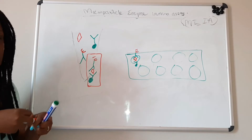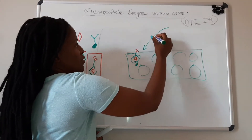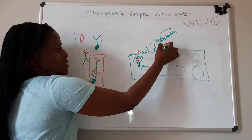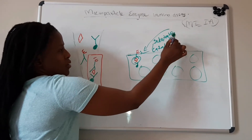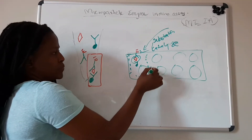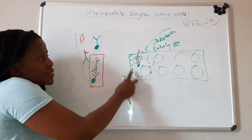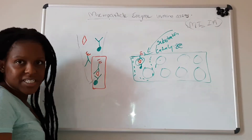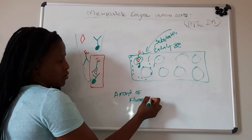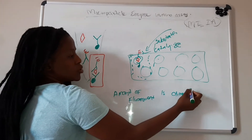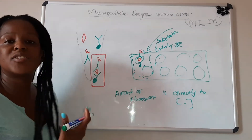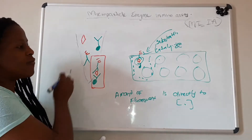Upon addition of a substrate, the enzyme is going to catalyze the substrate, leading to fluorescence formation. The amount of fluorescence that has been produced is going to be measured, and the amount of fluorescence is directly proportional to the concentration of the analyte that has been tested.